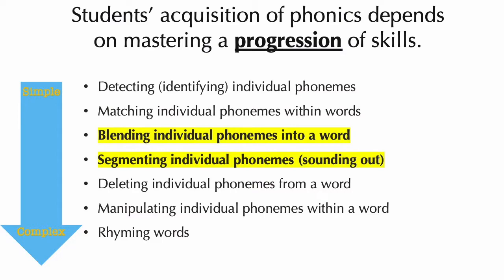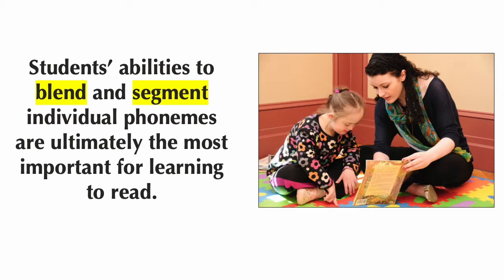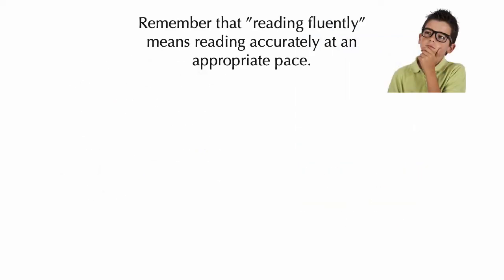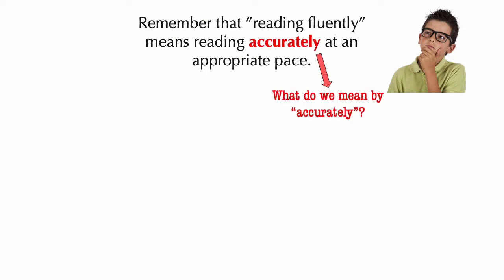Now let's focus on these two skills: blending and segmenting. According to research, students' abilities to blend and segment individual phonemes are ultimately the most important for learning to read. Based on what you know about phonics and early literacy, why do you think those two skills are the most important? To answer that question, remember that reading fluently means reading accurately and at an appropriate pace. Fluency also includes reading with appropriate expression, but let's focus on accuracy and pace.